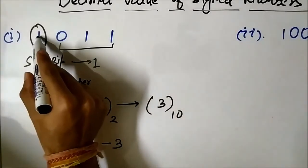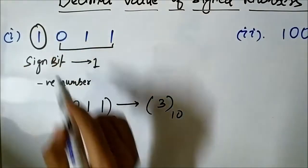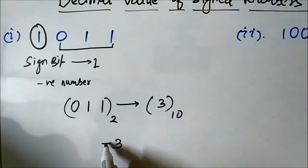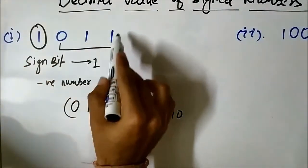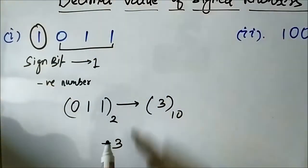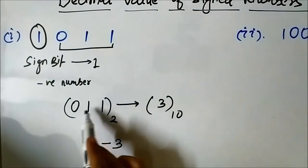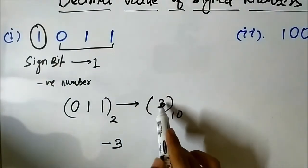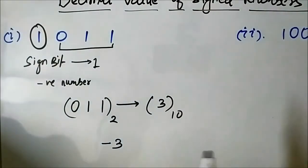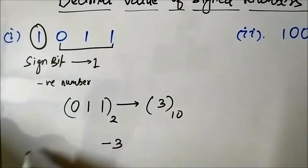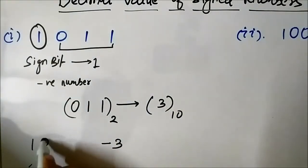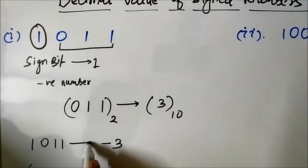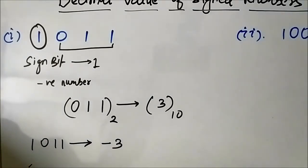So the number 1011: the first bit (1) is the sign bit indicating negative, and the magnitude bits are 0, 1, 1, which in binary form has a decimal equivalent of 3. So 1011 represented in sign magnitude system is minus 3.